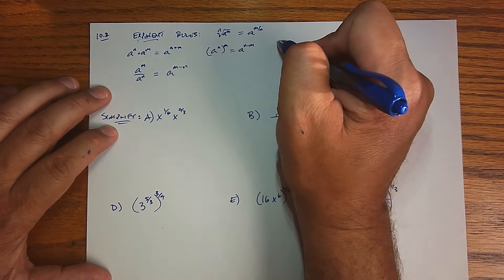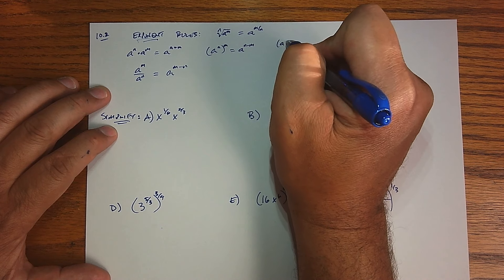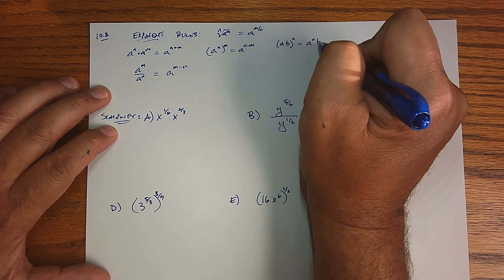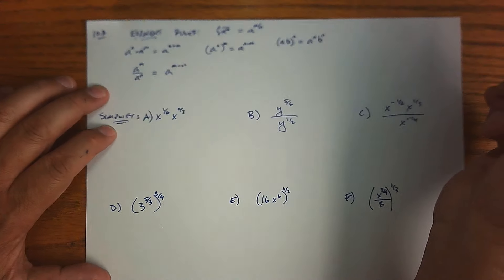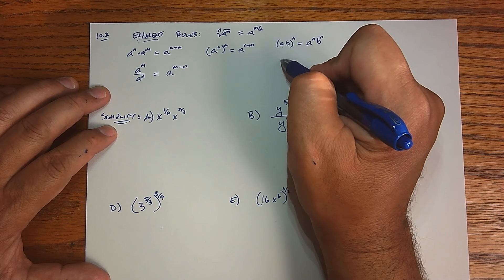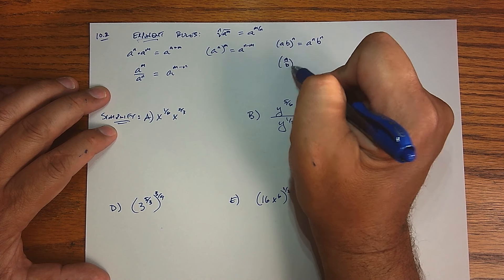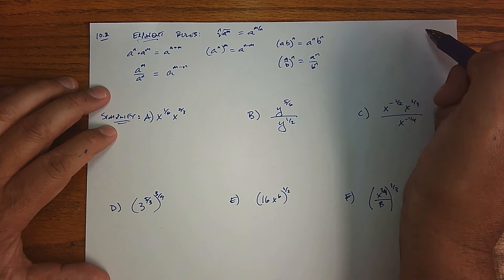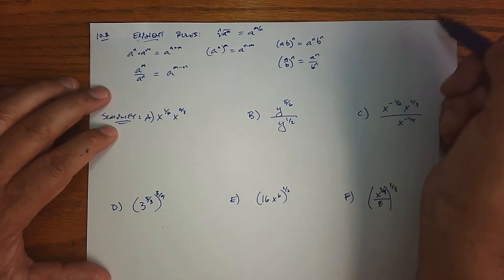Another one that we kind of saw use is what happens if I have a product being raised to a power. Well, in that case, we can kind of distribute the power, right? I don't really like to use that word, but that's each factor gets hit by the power. And of course, there was a power of a quotient where both the numerator and the denominator got hit by that power.